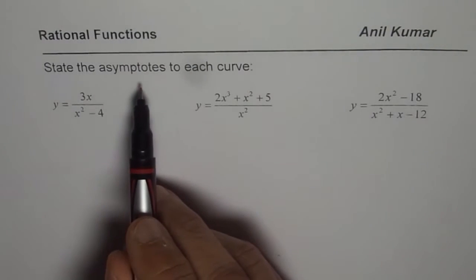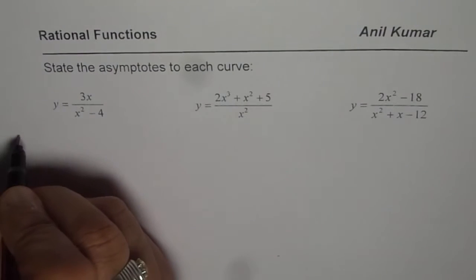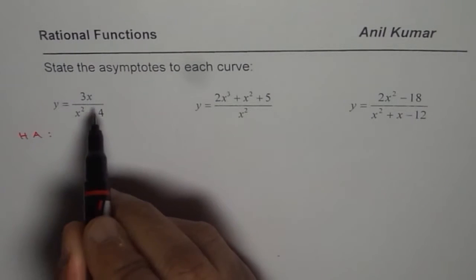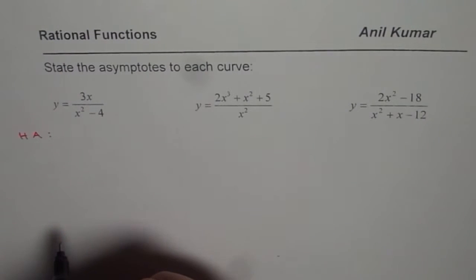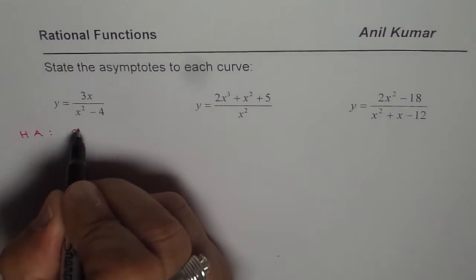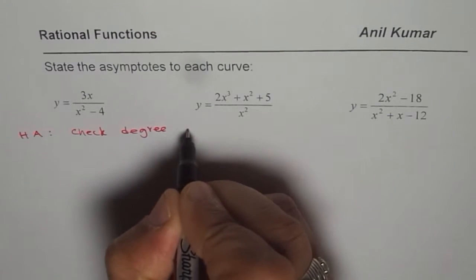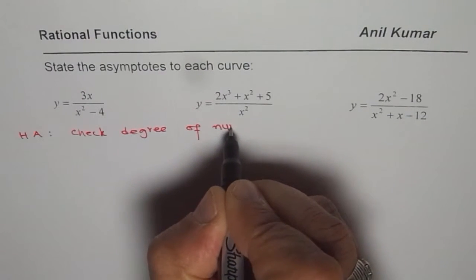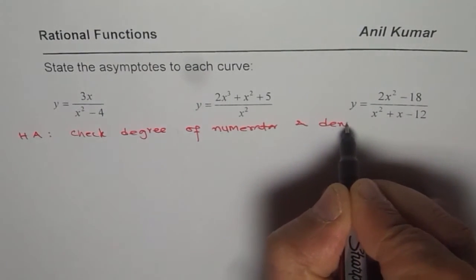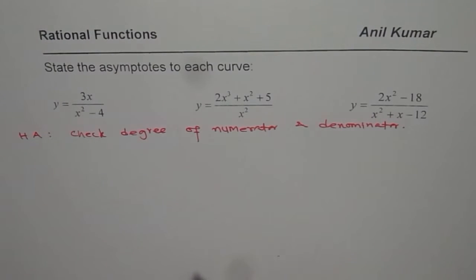Now to find horizontal asymptotes, what should we do? Let us first discuss horizontal asymptotes. For horizontal asymptotes we check the degree of numerator and denominator. That is what we do to find horizontal asymptotes.